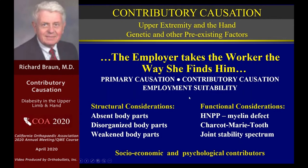We're going to move now to considerations of contributory causation as it affects the upper extremity and the hand. We'll talk about genetic factors and also some pre-existing factors that involve both obesity and diabetes. We know from the labor code that the employer takes the worker the way she finds him, and we're dealing with primary causation and contributory causation — both important factors in the eventual assignment of impairment and apportionment.